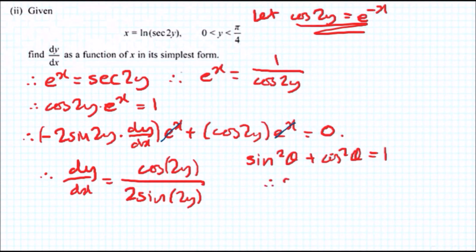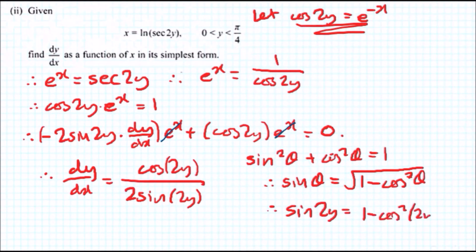So we're left with something like sine theta equals square root of 1 minus cos squared theta. Now, theta in this case will be 2y. So this means that sine 2y equals square root of 1 minus cos squared 2y. Cos 2y is e^(-x). So that means cos squared 2y is e to the power of negative 2x.